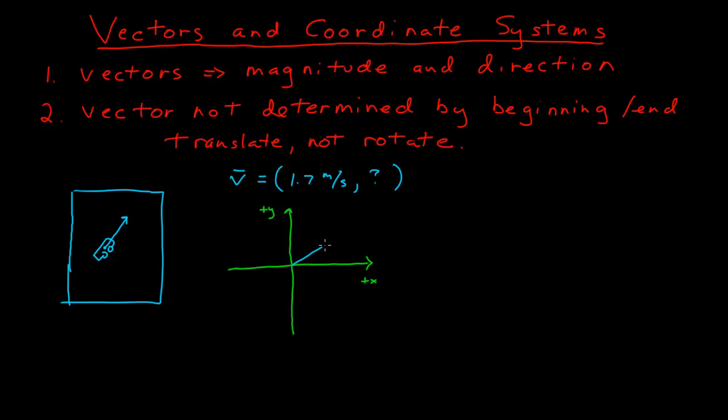And so, I now have my velocity vector. And I place it so that the origin of the vector, or the tail of the vector, is at the origin of the coordinate system. And I can do that, because I can translate vectors wherever I want, so I have the tail at the origin.